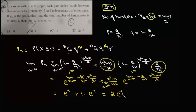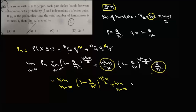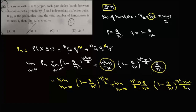Now we evaluate the limit as n → ∞. We split into two limits: the first is lim (1 − 2/n²)^((n²−n)/2), and the second combines the coefficient (n²−n)/2 · (2/n²) with (1 − 2/n²)^((n²−n−2)/2). Both are of the 1^∞ indeterminate form.